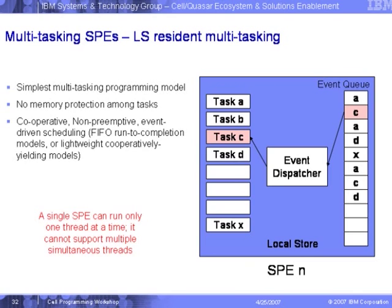For multitasking, we can pack our workloads into different tasks at the Linux level, at the kernel level, or at the user space level — tasks A, B, C, D. Associated with each task we have an event, and a queue of events. Depending on the occurrence of the event, we run the task. We need a program called the event dispatcher — similar to an SPE kernel, which is a small SPE control program that manages those events, recognizes them, fills the events, and dispatches the task to serve the events.